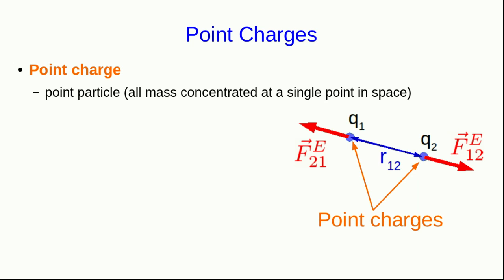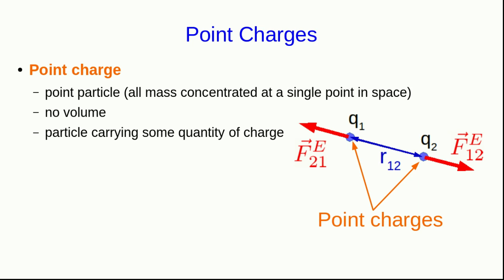In PHYS 1104 we met the idea of a point particle in which all of its mass is concentrated at a single point in space, so it has no volume. A point charge is just a point particle which is also carrying some quantity of charge, and that charge, just like the mass, is also all concentrated at a single point in space. This may seem like a ridiculous idealization, but experimentally, as far as we can tell, electrons are point charges. And while protons aren't really point charges, for all practical purposes, unless you're doing calculations involving very high energy interactions like in a super collider, you can treat them as point charges.